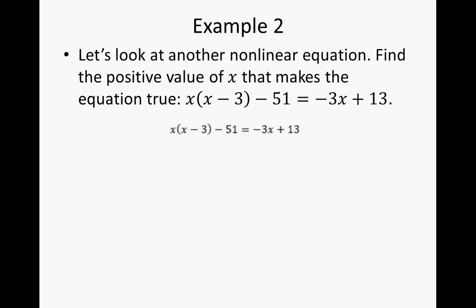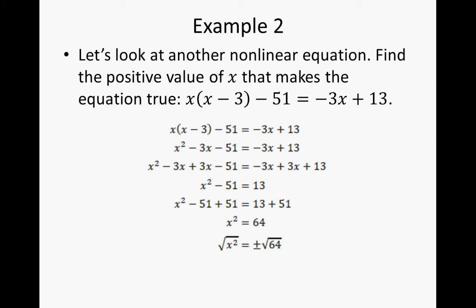First of all, we have to use our distributive property to get rid of the factor in parentheses. So that means x times x is x squared. Then we have minus 3x minus 51 equals negative 3x plus 13. Adding 3x to both sides, we get x squared minus 51 equals 13. Then add 51 to both sides, we end up with x squared is equal to 64. And taking the square root of that, we get plus or minus or positive or negative 8.